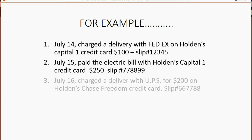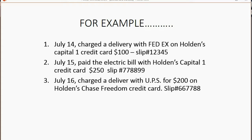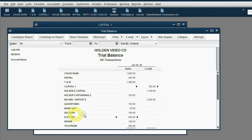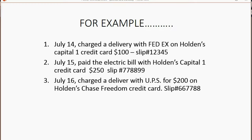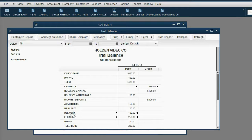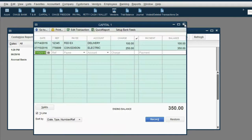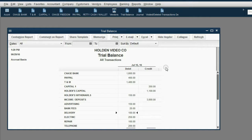Now, this next one is interesting. July 16th, Holden charged a delivery, but this time it's with UPS for $200, and this time it's in Holden's Chase Freedom credit card account. Even though it's a different vendor, it's still the same service, so the expense for the July 16th transaction should still be delivery expense. In the trial balance, delivery expense is only $100, but if we charge another delivery for $200, delivery expense will increase to a total of $300, and Chase Freedom will show up for the first time as $200.